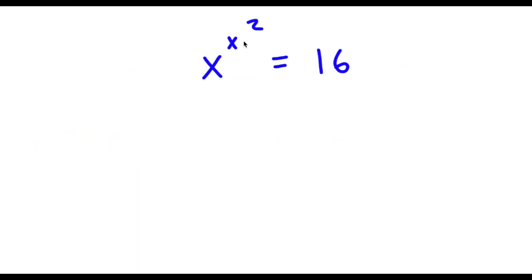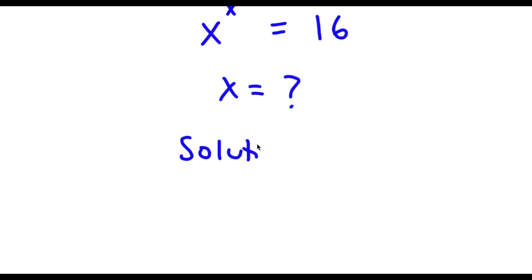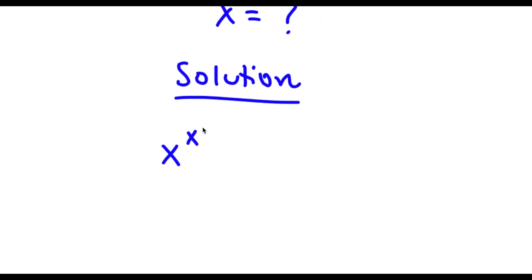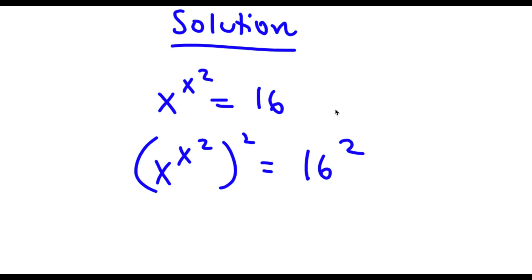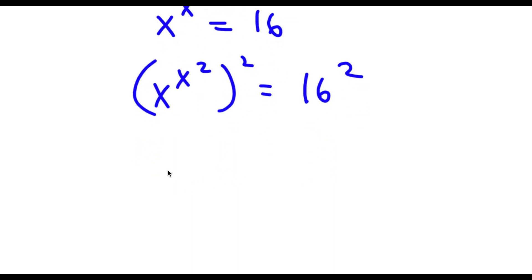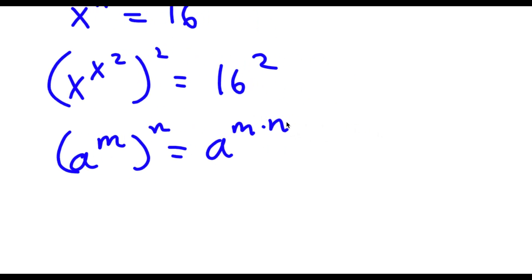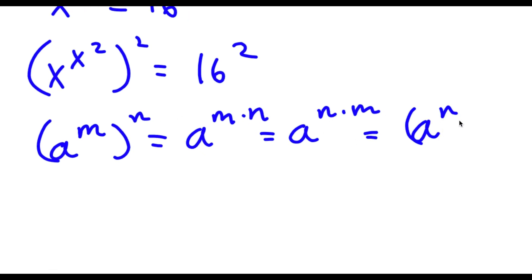Alright, so I have x to the power of x to the power of 2 is equal to 16, and I'm going to find the value of x. I'll take the power of 2 on both sides, giving x to the power of x to the power of 2, all to the power of 2, equals 16 to the power of 2. An important property of exponents is that a to the power of m to the power of n equals a to the power of m times n, and m and n are interchangeable, so a to the power of n times m equals a to the power of n to the power of m.